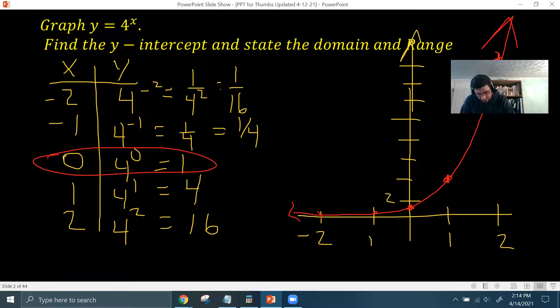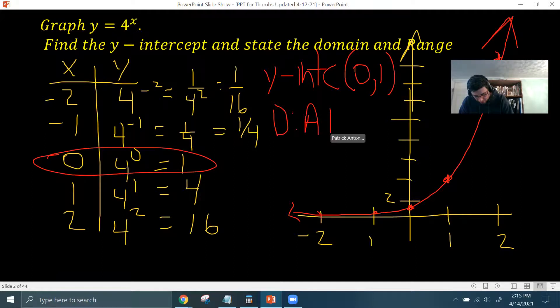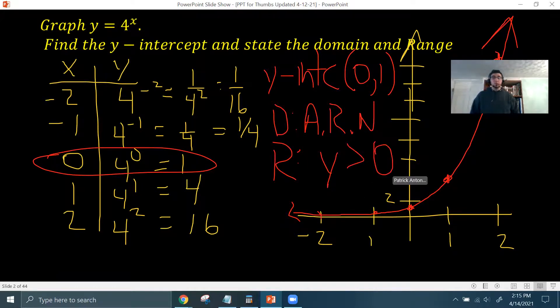Okay. So the y-intercept is the point (0,1). The domain is all real numbers. I'm just going to abbreviate ARN. And the range is y greater than 0. Don't put greater than or equal to. It's strictly greater than 0.